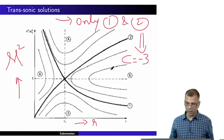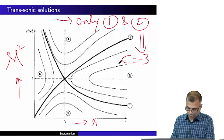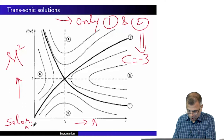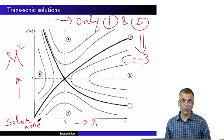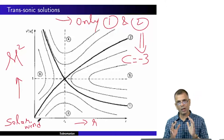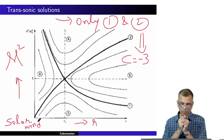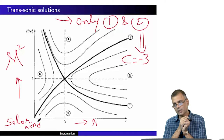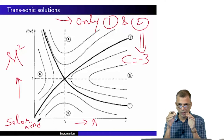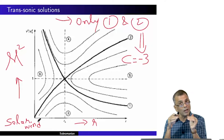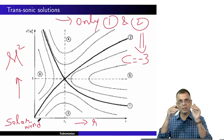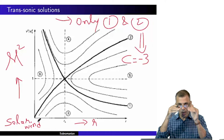Now, suppose we are considering the solar wind. The solar wind, as I explained a couple of classes earlier, is a wind emanating from the outermost atmosphere of the sun, which is the corona. The gas or plasma near the corona is almost at rest — it has a very small velocity, so it is definitely subsonic at the surface of the sun. Then it goes out, eventually passes through a sonic point where the velocity becomes equal to the speed of sound, and then becomes supersonic.